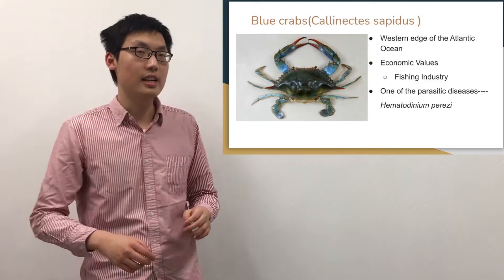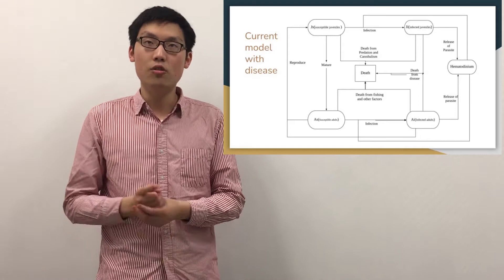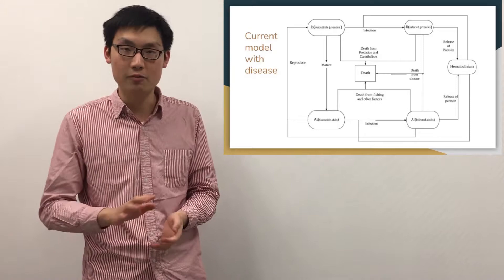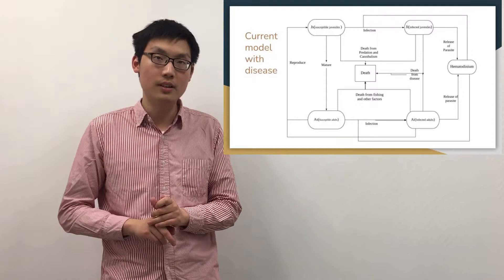Before introducing the flow chart of the model, let's talk a little about background on blue crabs. Blue crabs have three stages of life: the larvae, the juvenile, and the adult. The larvae stage doesn't factor heavily into the model, so we didn't include it. However, the juvenile and adult crabs are both included in the model.